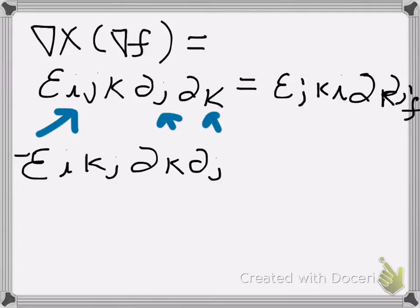Well, that's true, so there's nothing that prevents me from swapping the order of the partials, so this is still equal to Levi-Civita epsilon i j k, partial j, partial k of f.